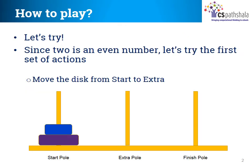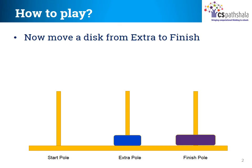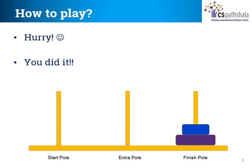Here we have two discs. Since 2 is an even number, we will try the first set of actions and do it over and over again till all the discs are moved from start pole to the finish pole. The first action is to move the disc from the start pole to the extra pole. Now move a disc from the start pole to the finish pole. And now the third action: move the disc from extra pole to the finish pole. Hurray! Congratulations! We moved all the two discs from the start pole to the finish pole by doing the three set of actions only once.